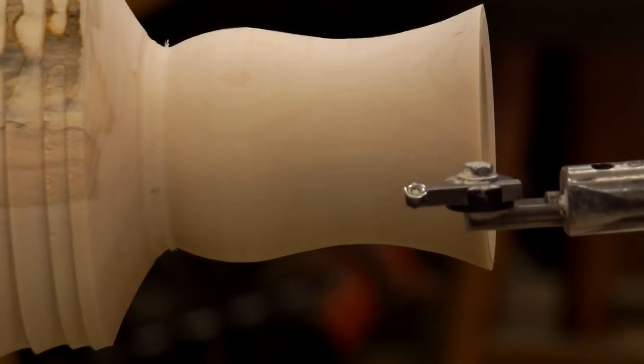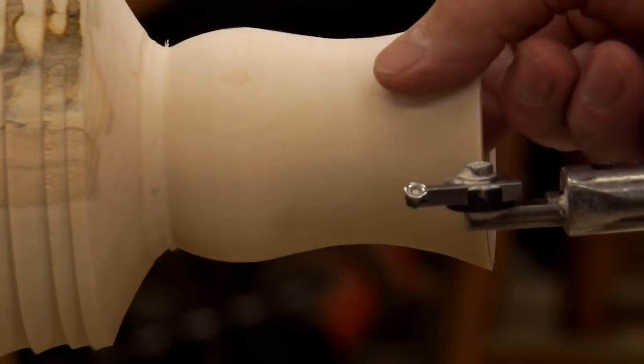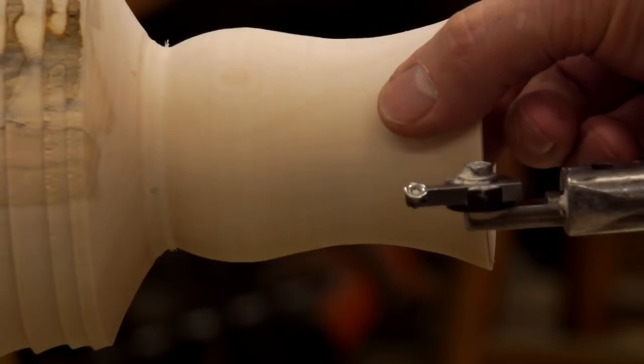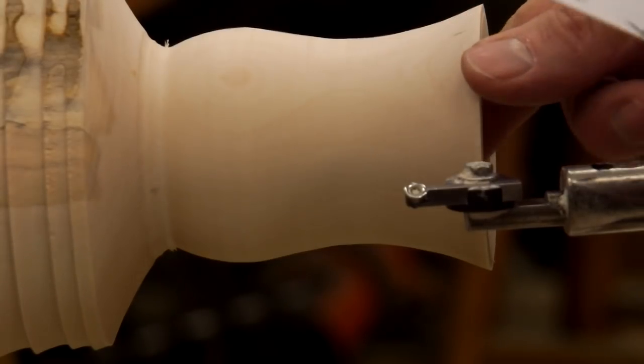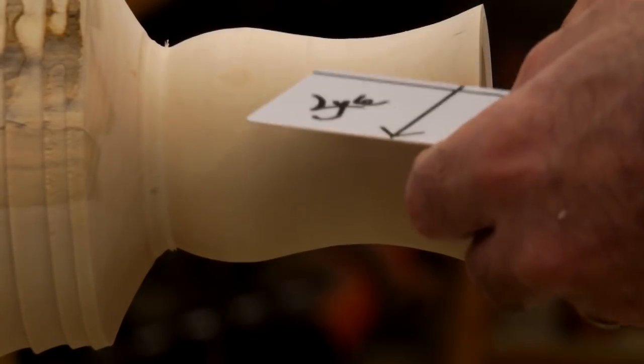All right, now we're going to use the laser to measure the wall. I'm going to be carving on this, so I don't want to make this too thin, but I need to get it uniformed, so we're going to use the laser to help do that.